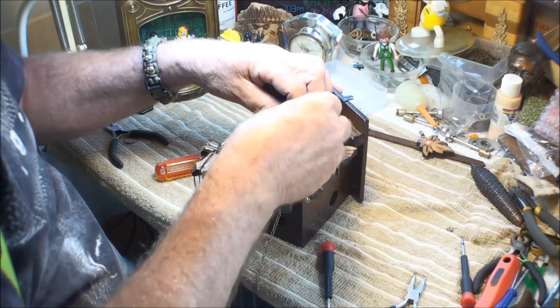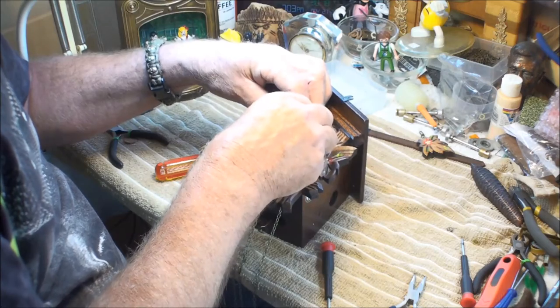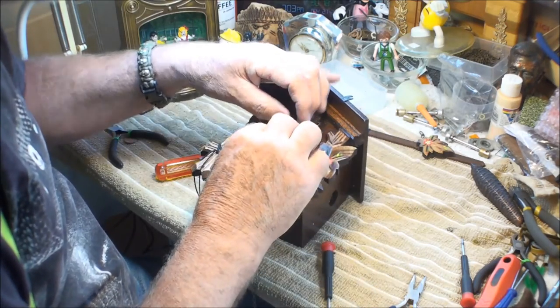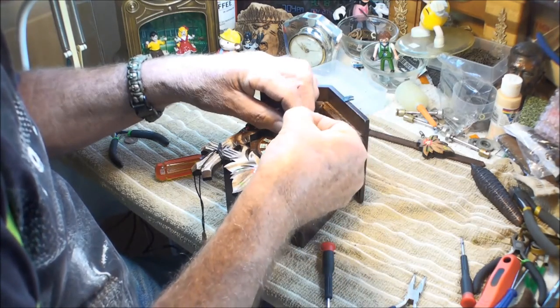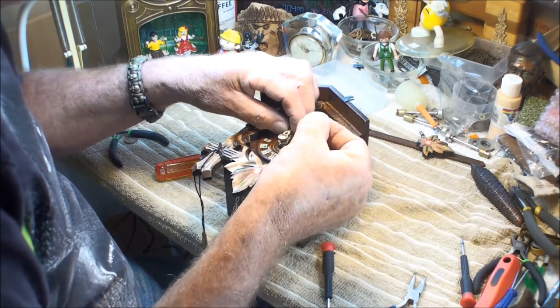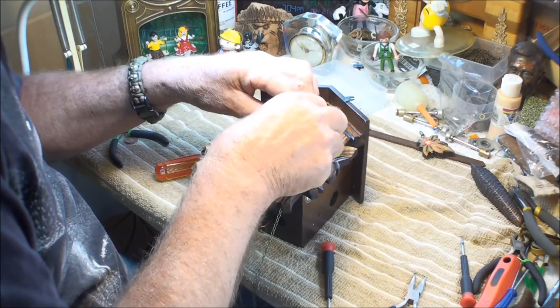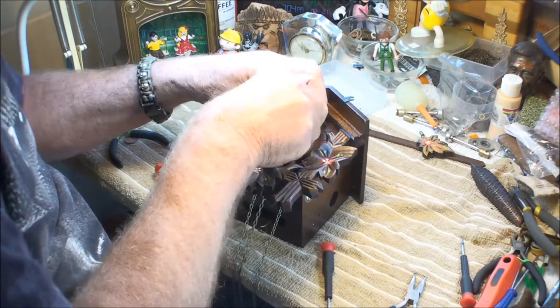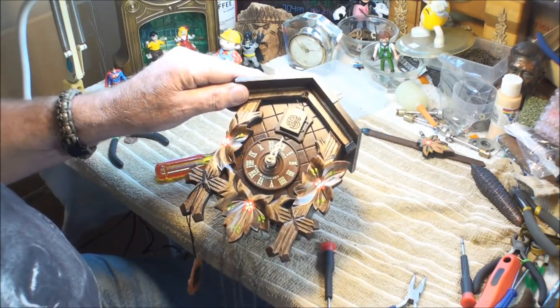Then this square nut just sits on there, then the hand sits right on there. It's got this dished washer that sits on top of that. Try to hold this still so I can get this all together. And this nut doesn't make any difference, it's not dished or anything. So there we go.